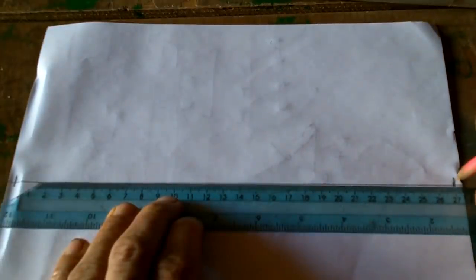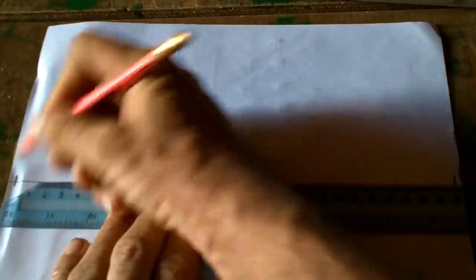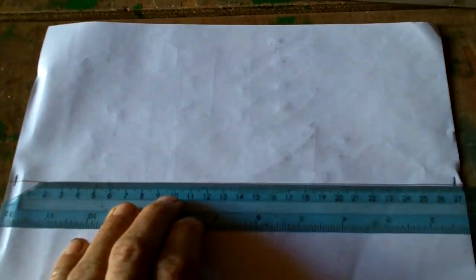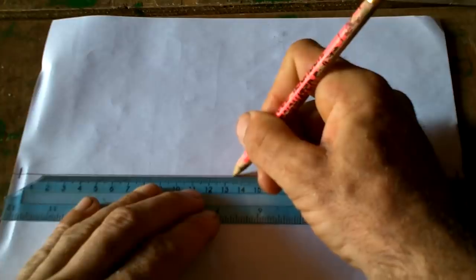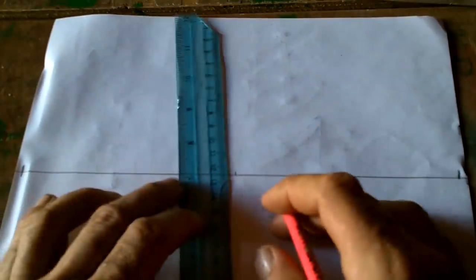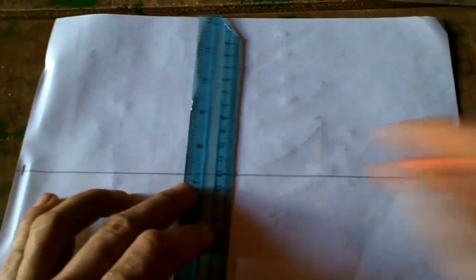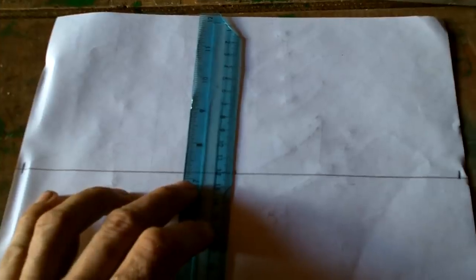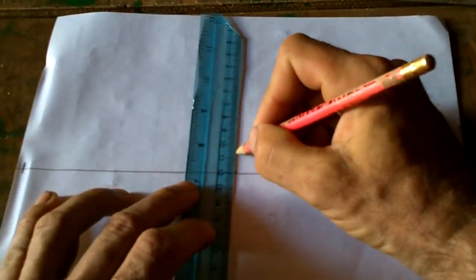2.7 meters, we're going to draw 27 centimeters. So we're dividing everything by 10. 27 divided by 2, 13 and a half. I need to go one and a half centimeters up from that to get to 15 centimeters.